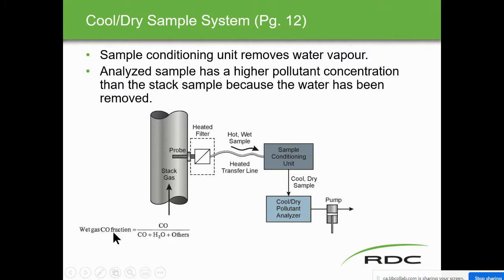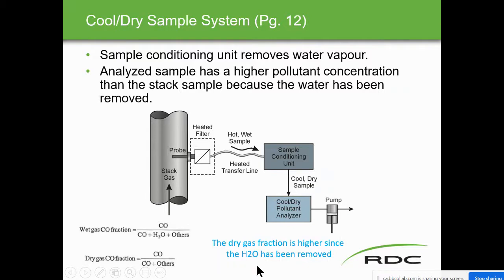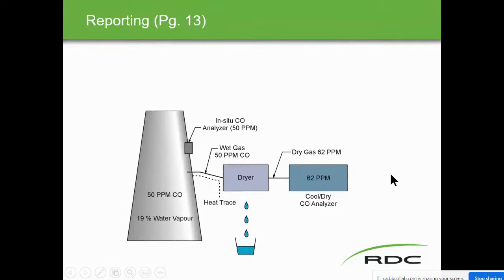Here's the wet gas CO fraction: CO over (CO + CO2 + other things emitted). The dry gas has CO over (CO + others) — a higher percentage because removing the water from the denominator makes the fraction larger. The dry gas fraction is higher since the H2O has been removed. When reporting, page 13 states that the words 'wet bias' or 'dry bias' need to be included with the measurement.